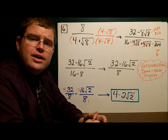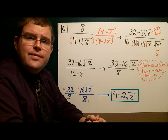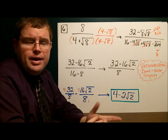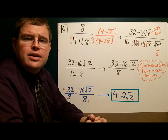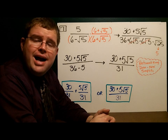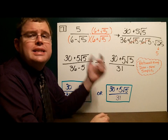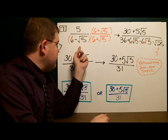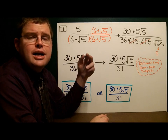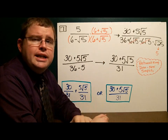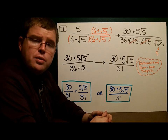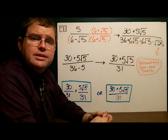Now I'd like for you to take a look at Example 7 — give it your best shot. Please pause the video and let's see how you do. When you finish, come back and we'll take a look at the answer. The fraction has a square root in the denominator — it's a binomial, so I have to use the conjugate. We have 6 minus the square root of 5, so the conjugate means same numbers, change the operation: 6 plus the square root of 5 over 6 plus the square root of 5.